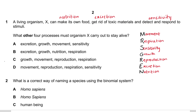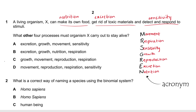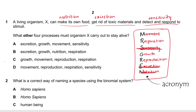Question 1: A living organism X can make its own food, get rid of toxic materials, and detect and respond to stimuli. What other four processes must organism X carry out to stay alive? The acronym MRS GREN covers all processes. Cutting out nutrition, excretion, and sensitivity, which organism X already does, leaves movement, respiration, growth, and reproduction — answer is C.